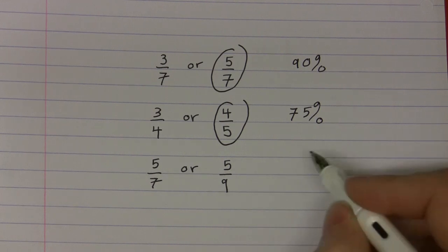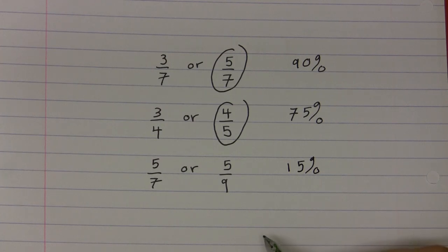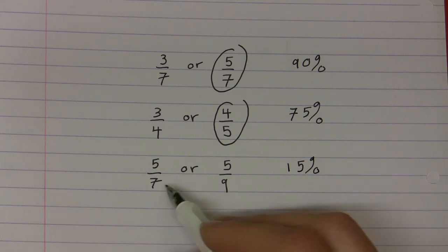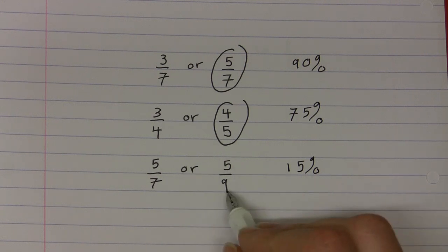In the research, only 15 percent of the responses to this question were correct. It is tempting here to say that because 9 is greater than 7, then 5 ninths is greater than 5 sevenths. However, the opposite is true.